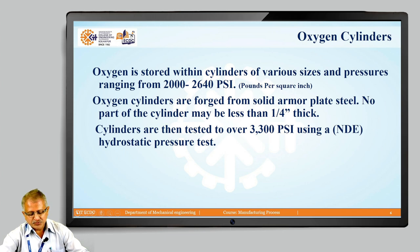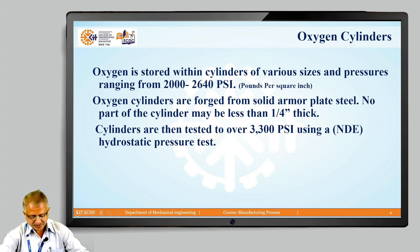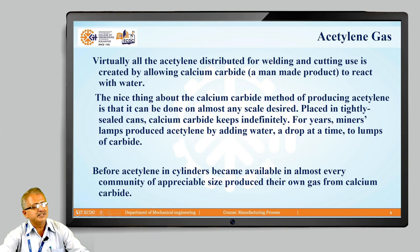Oxygen cylinders are normally painted black and have right-handed wall outlets. Usual sizes are 3400, 5200, or 6800 liters. The oxygen volume in a cylinder is directly proportional to its pressure. A safety nut allows oxygen to drain if temperature increases. The cylinder valve is kept closed when not in use. These cylinders are regularly retested using hydrostatic service and are chemically cleaned and annealed to relieve stresses created by handling.